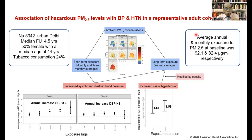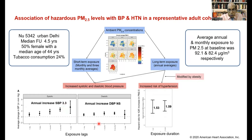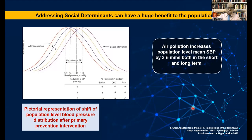This is an important study of 5,000 patients in Delhi which shows that with increased exposure to PM2.5, by the end of the year the systolic blood pressure is increased by 3.3 mm Hg, and this shows the hazard ratio: as time passes, the hazard ratio for development of hypertension increases. Air pollution increases population-level mean systolic blood pressure by 3 to 5 mm Hg, both in the short-term and long-term.